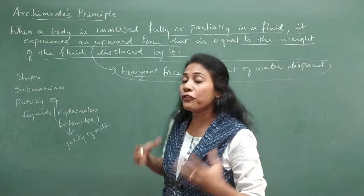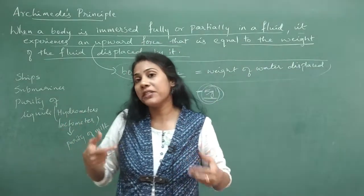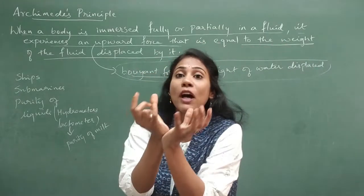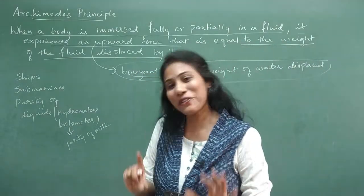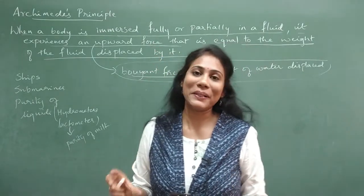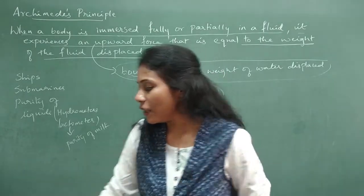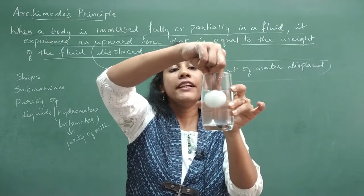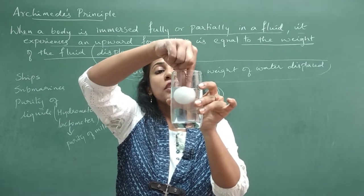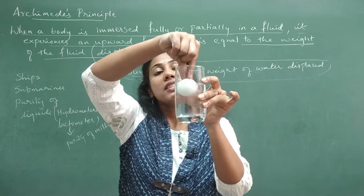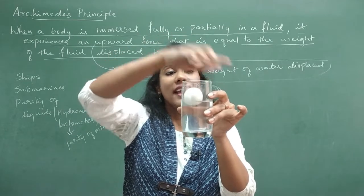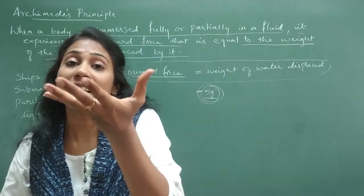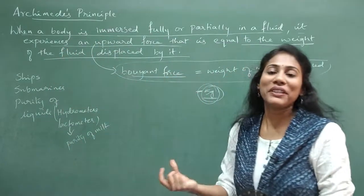So the amount of buoyant force experienced by an object is always equal to the amount of water that got displaced. This is what we mean by Archimedes' principle. If I immerse a ball and ask how much buoyant force it experiences, I take the displaced water's mass — that equals the buoyant force.